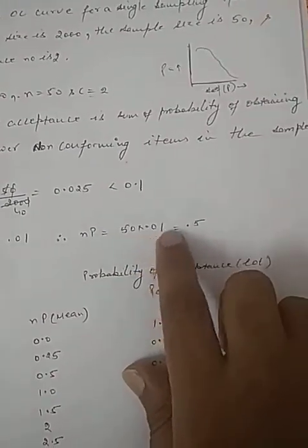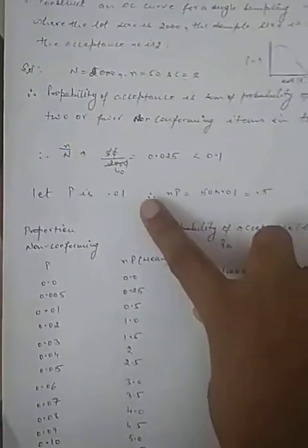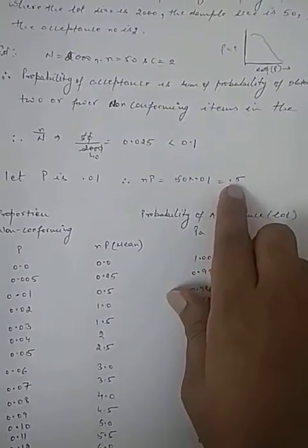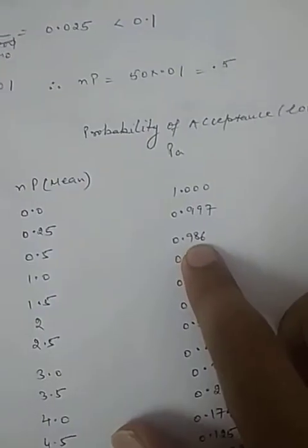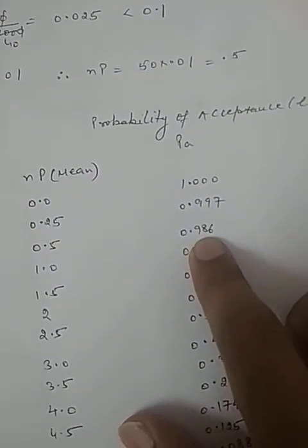Let's assume proportion defective p equals 0.01. For Poisson distribution, we need to calculate the mean value which equals np. Our n is 50, p is 0.01, so the mean value is 0.5. For 0.5, the acceptance value is 0.986. This means if we inspect a thousand samples, we would accept 986.